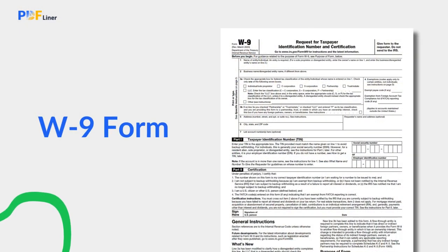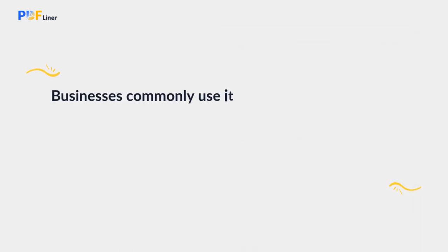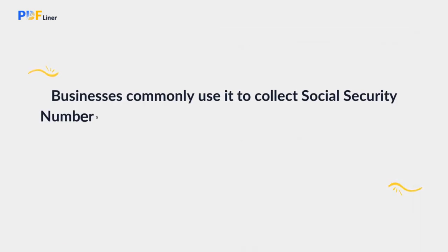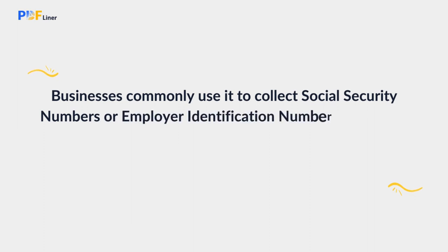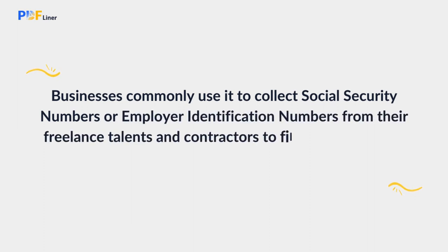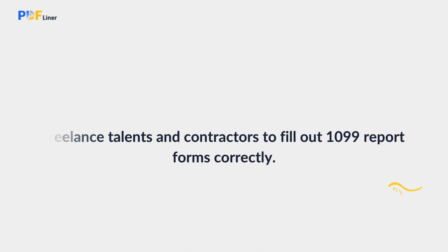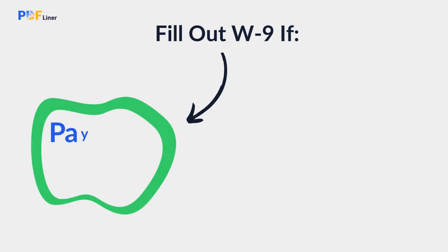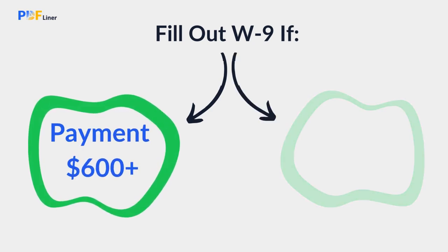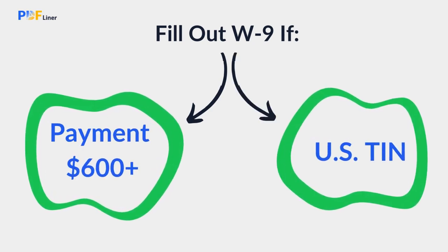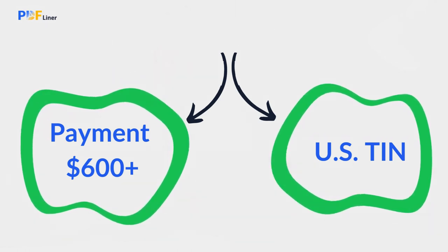The W-9 is the IRS-recognized way to request a U.S. person's tax information. Businesses commonly use it to collect Social Security numbers or employer identification numbers from their freelance talents and contractors to fill out 1099 report forms correctly. If you are about to receive a payment for $600 or more and have a U.S. tax ID number, you should fill out the W-9 to certify your TIN for tax reporting purposes. The requester will then fill out a 1099 form, report the payment to the IRS, and send you a copy for your tax return.